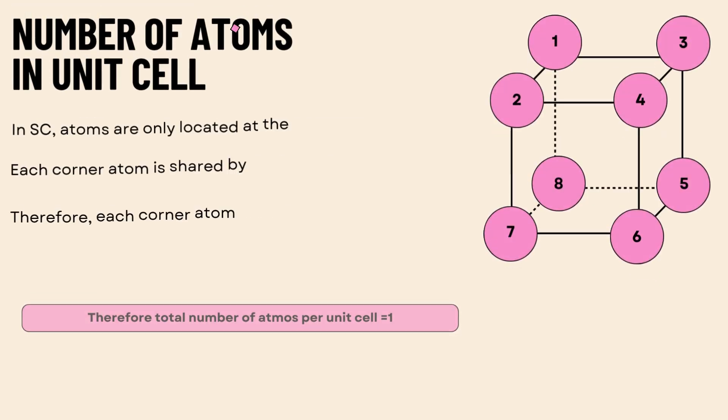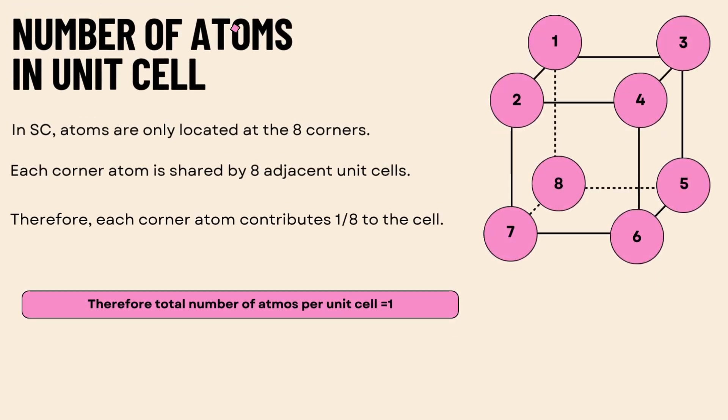This explains how to calculate the effective number of atoms in a unit cell for the simple cubic structure. Atoms are located at eight corners. Each corner atom is shared among eight adjacent unit cells. Contribution of each corner atom to one unit cell equals 8 × (1/8) = 1 atom.